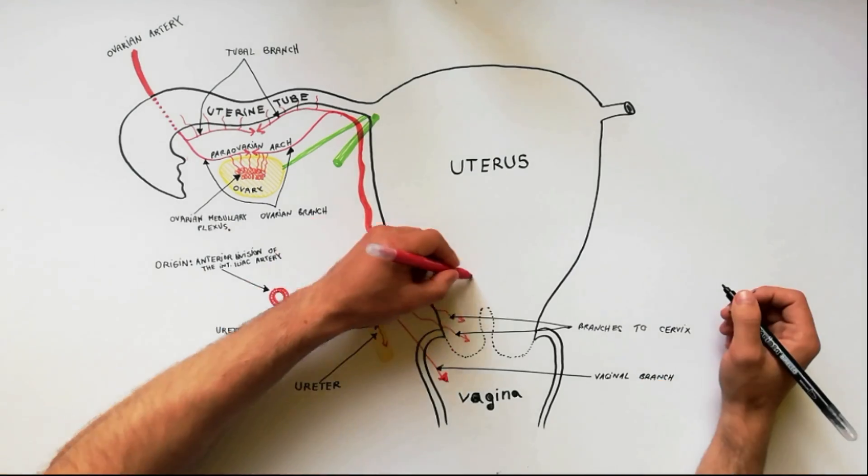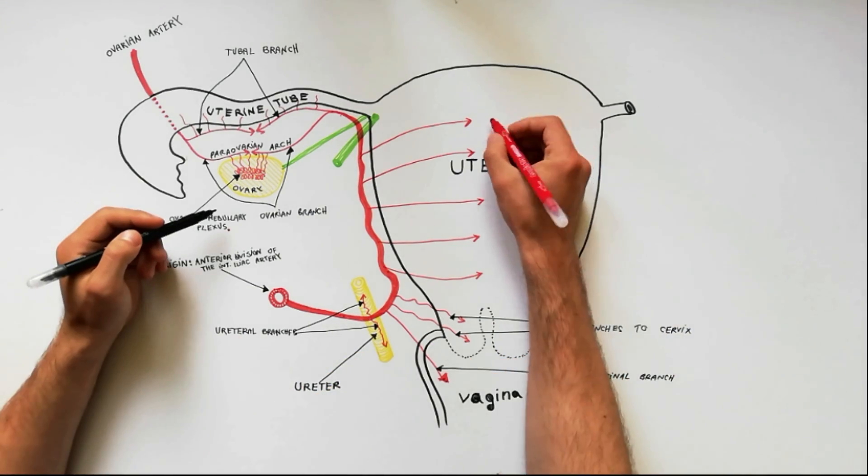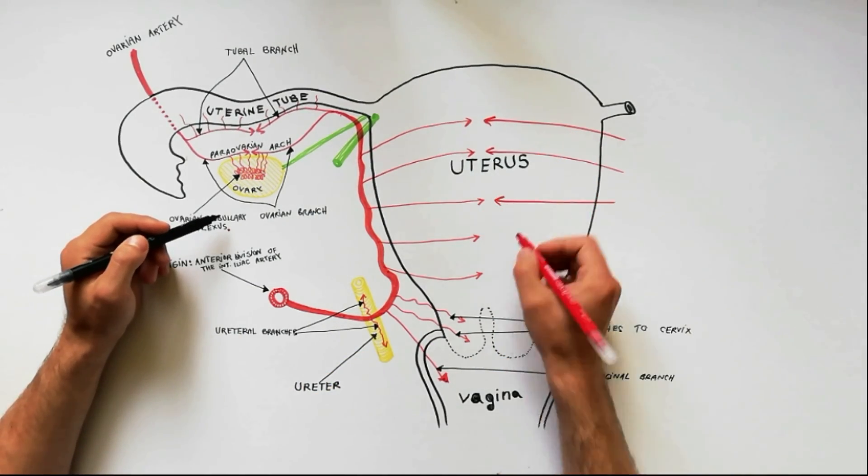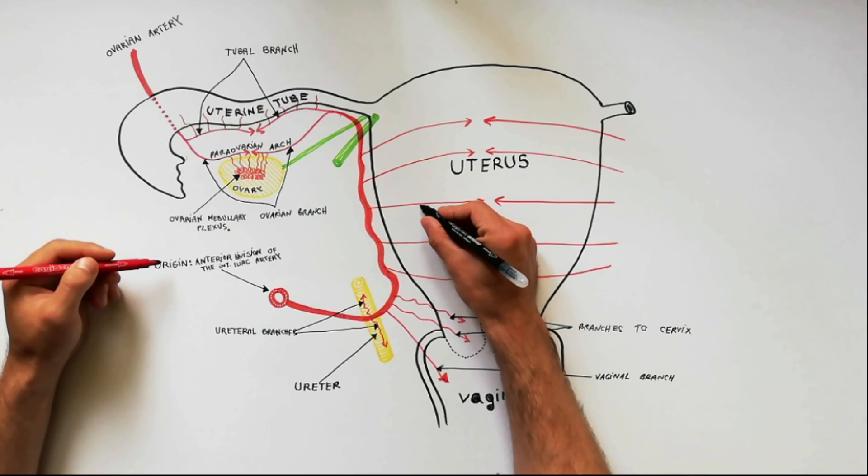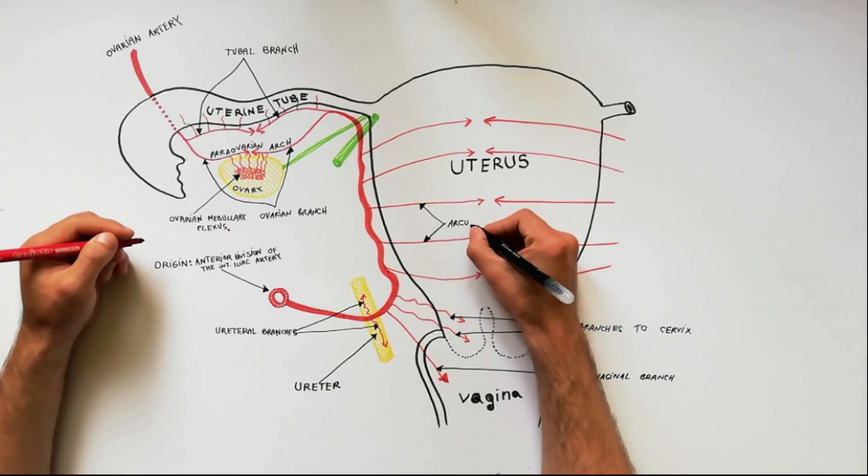Along the side of body of the uterus, it gives off arcuate branches, which run transversely on the anterior and posterior surfaces of the body of uterus and anastomose with their counterparts along the midline.